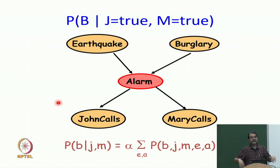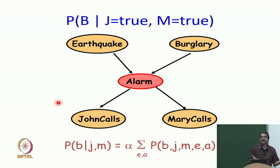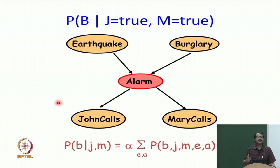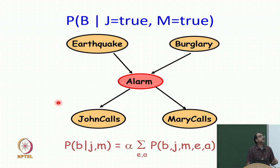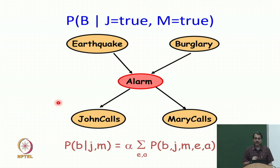So my evidence is: I was having a party, suddenly John called and said there is an alarm. I thought John is often drunk, who cares. Then suddenly Mary also calls saying 'come back home, there is an alarm.' Now I need to figure out whether it was caused by burglary, earthquake, or they were just hallucinating. So I ask: what is the probability of burglary given John called and Mary called, and all the probability distributions I was already aware of.